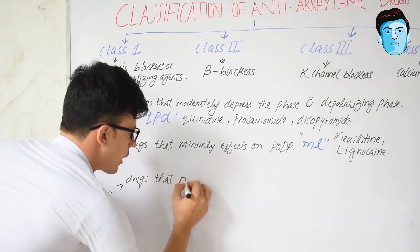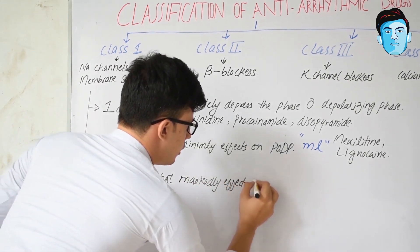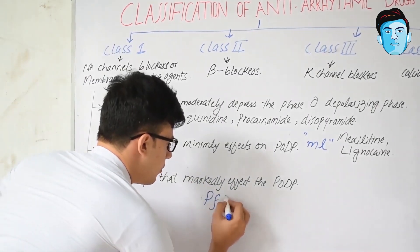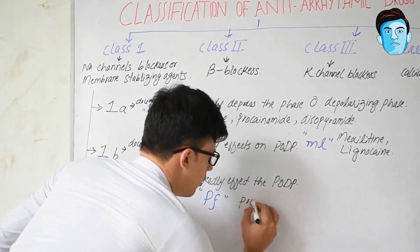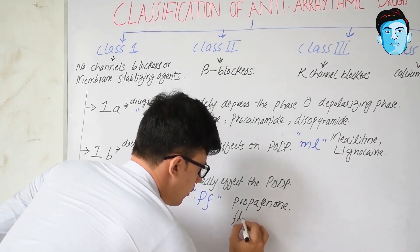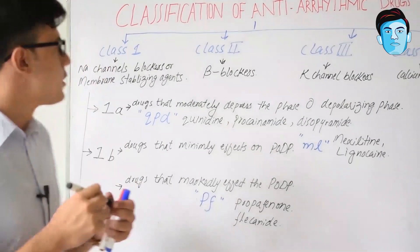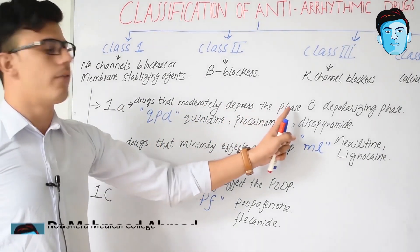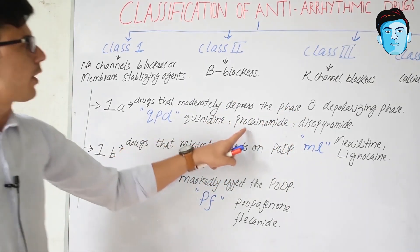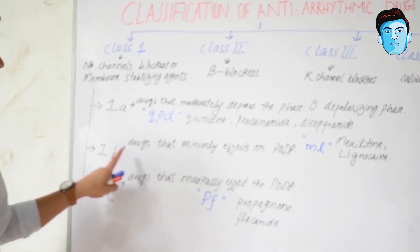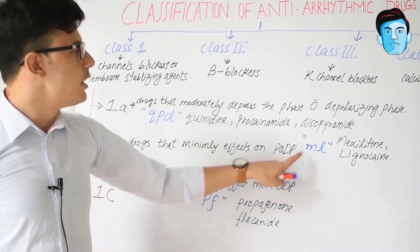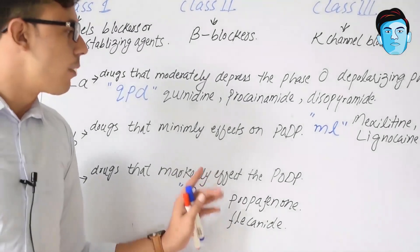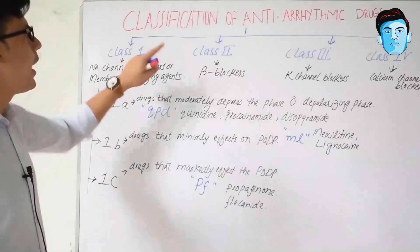Class 1c are the drugs that markedly affect the phase zero depolarizing phase. For this class we have the mnemonic PF, where P stands for propafenone and F stands for flecainide. So to summarize: class 1a drugs moderately depress phase 0 and contain quinidine, procainamide, and disopyramide. Class 1b drugs minimally affect phase 0 and contain mexiletine and lignocaine. Class 1c contains propafenone and flecainide and markedly affects phase 0.